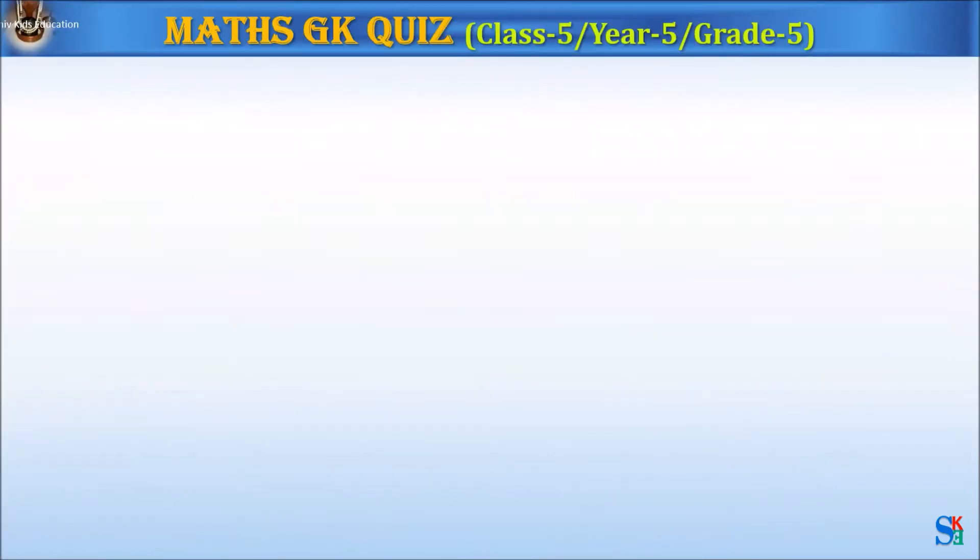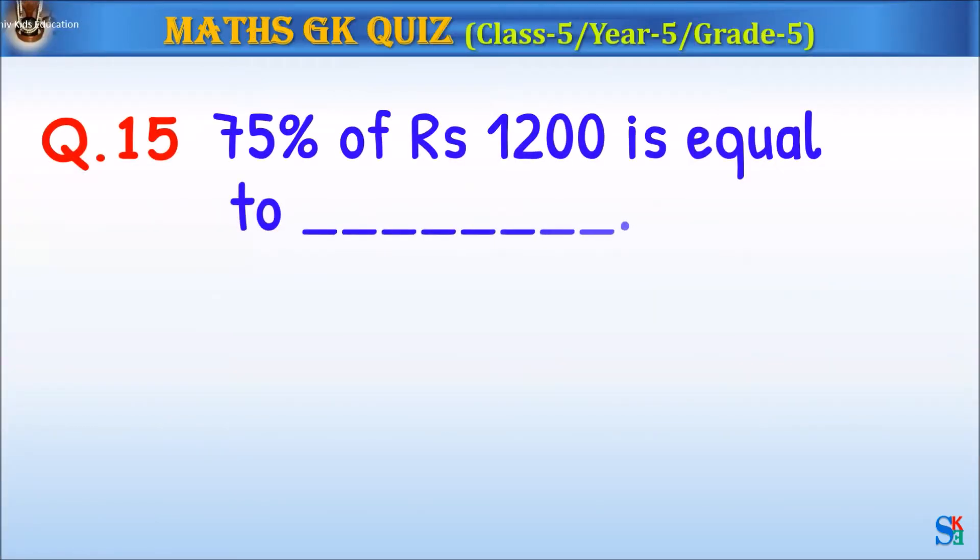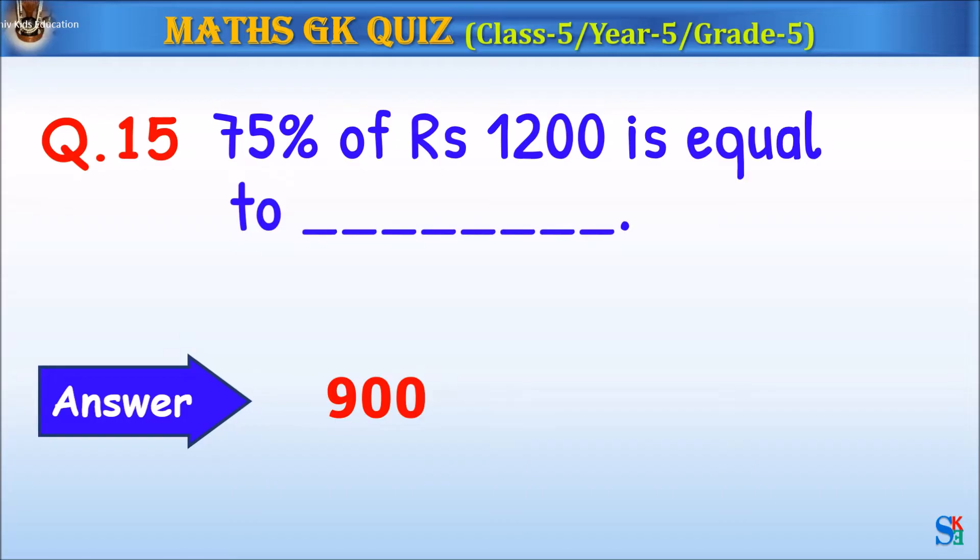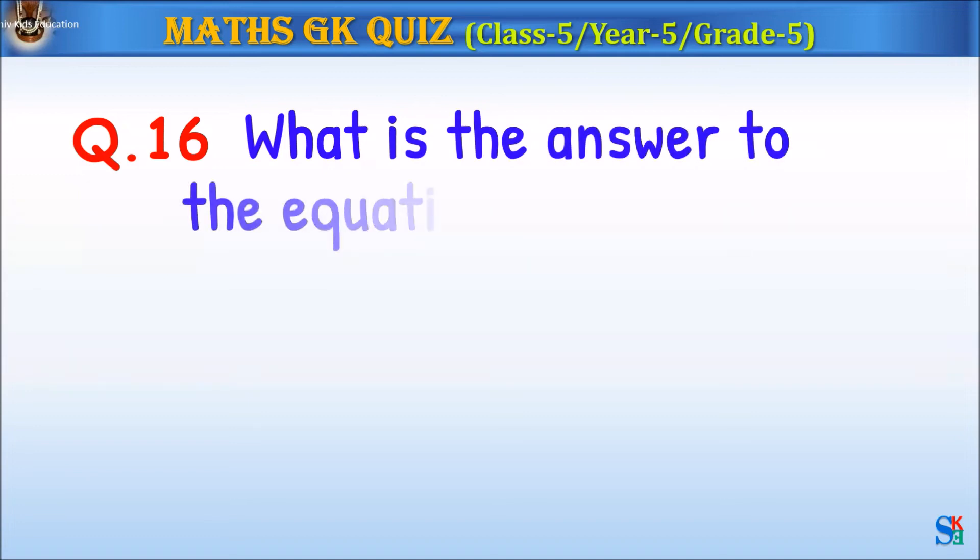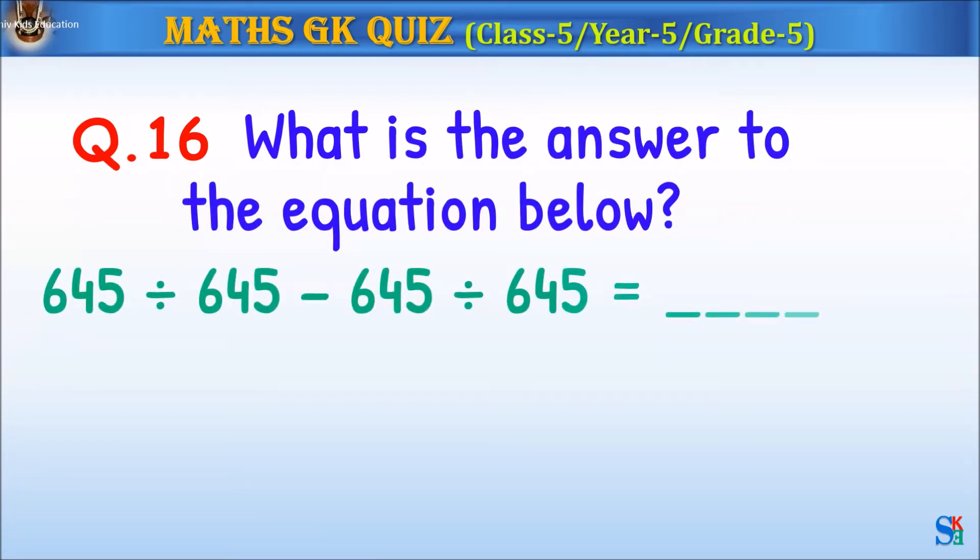Question 15: 75% of 1,200 rupees is equal to what? The answer is 900. Question 16: What is the answer to the equation below?